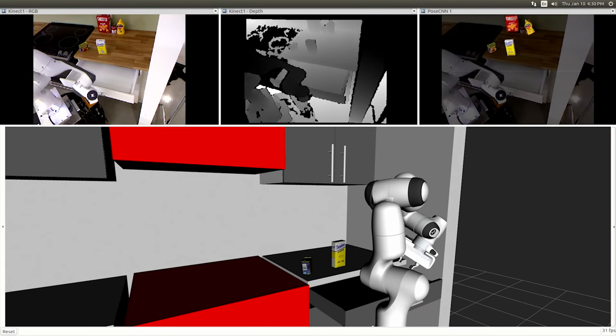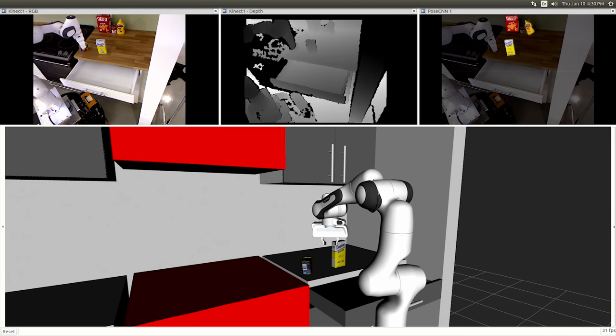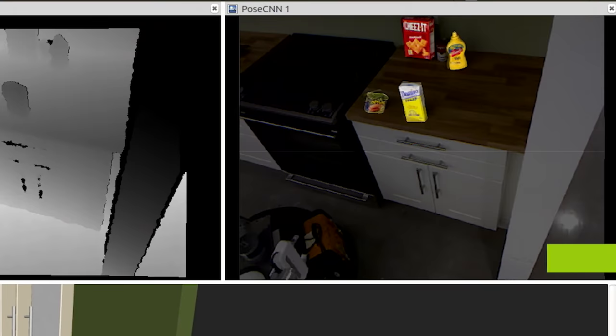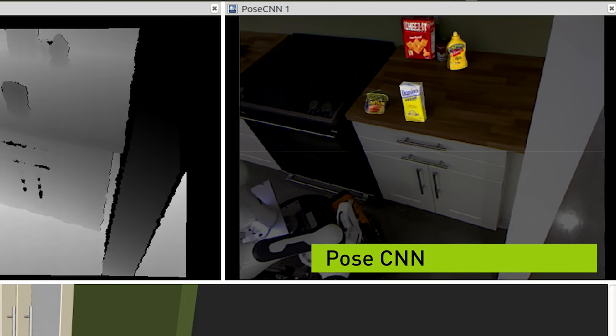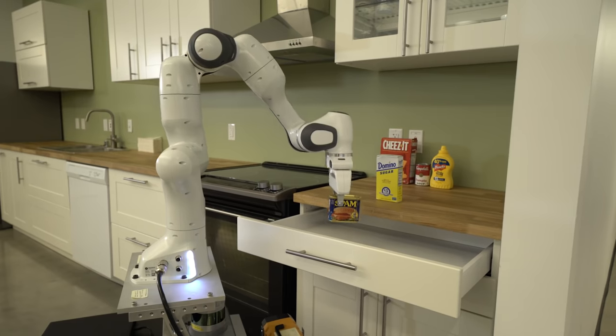On the perception side, we're using a technique we call Pose CNN, which was developed both here and at the University of Washington, which is a deep learning technique for taking the image of the area in front of the robot and detecting where objects are in that space.